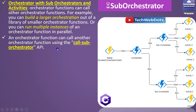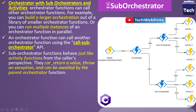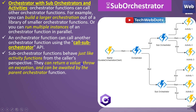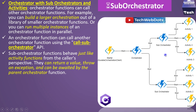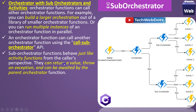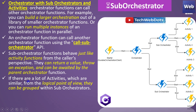By definition, an orchestrator function can call another orchestrator function using call sub orchestrator. The function behaves just like activity functions from the caller's perspective — they can return a value or throw an exception, and can be awaited by a parent orchestration function. This is the same behavior as calling activities directly from an orchestrator.